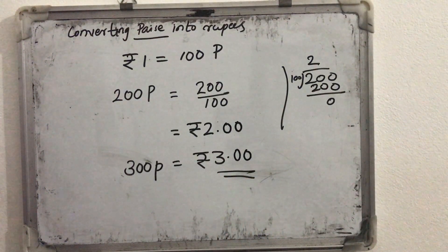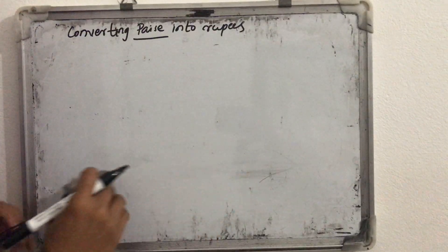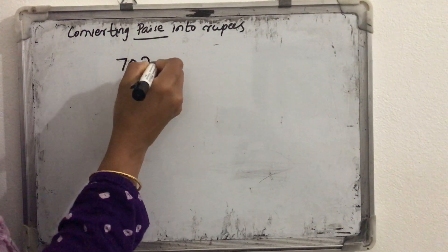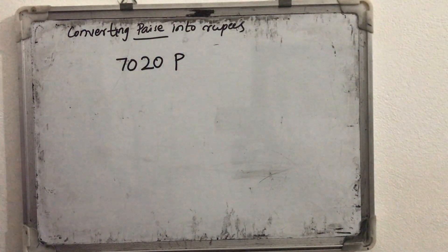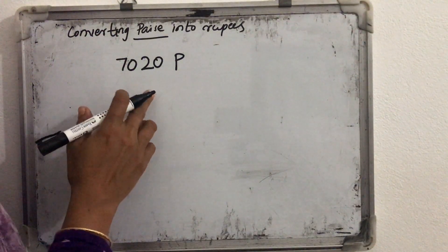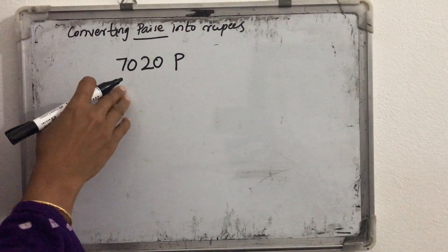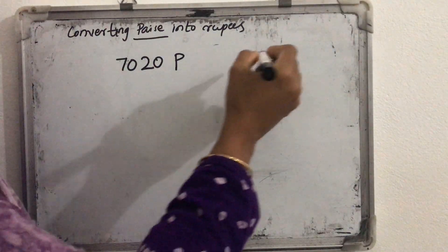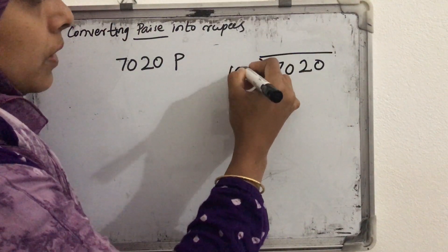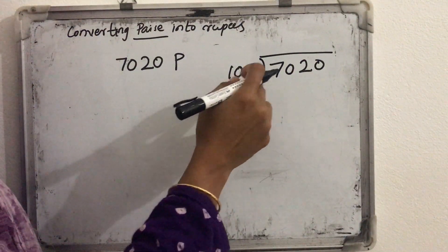Now if we want to convert another number — suppose 7,020 paise — when we convert into rupees, how we can do this conversion? In this case also we are dividing. We are dividing 7020 by 100. When we do this division, 7 divided by 100 is not possible. 70 by 100 also not possible.